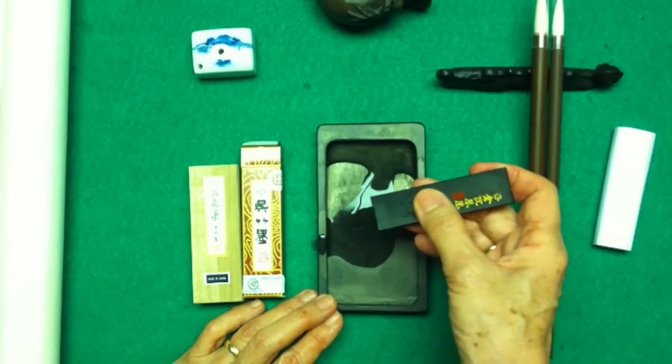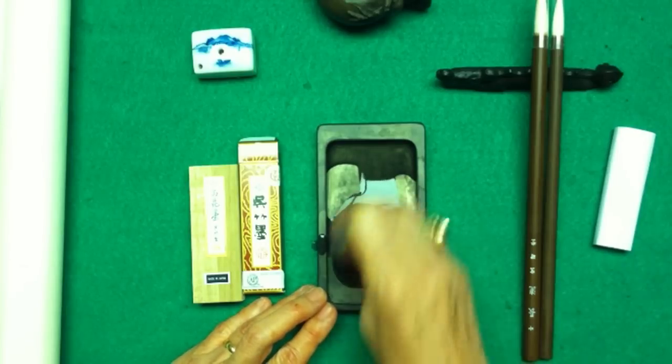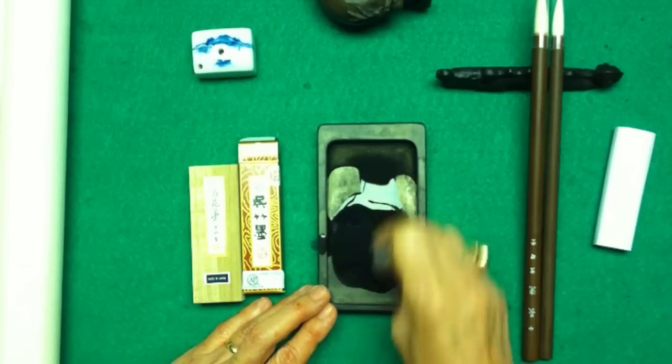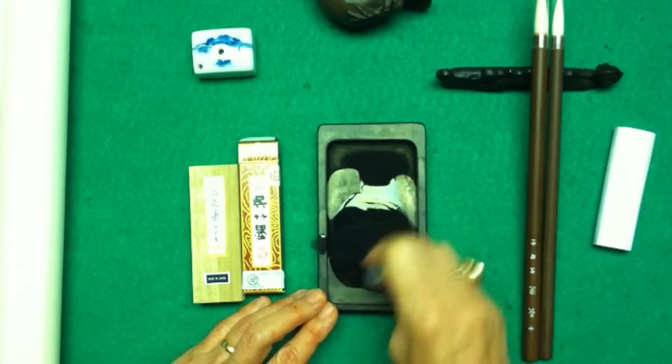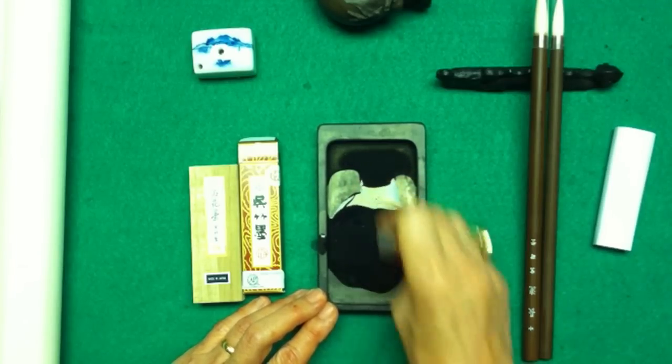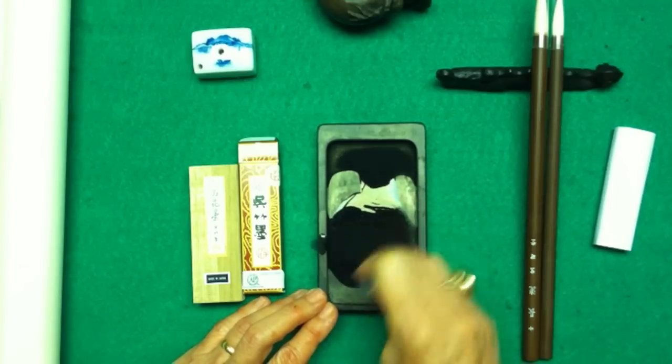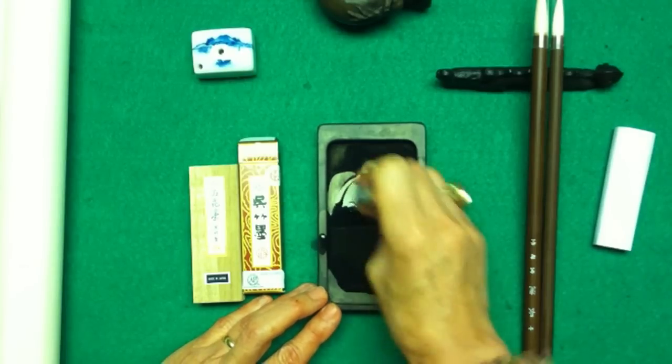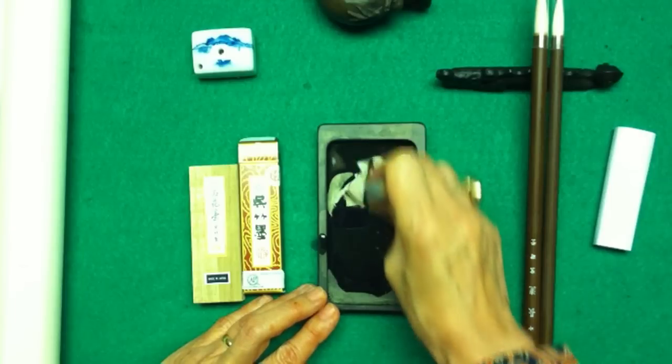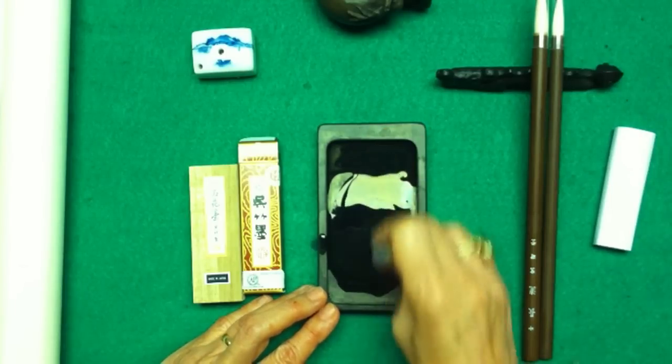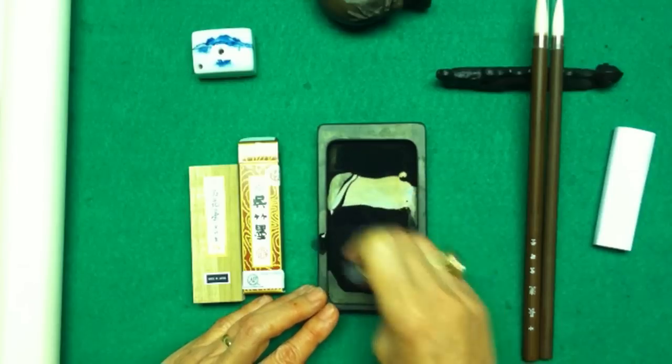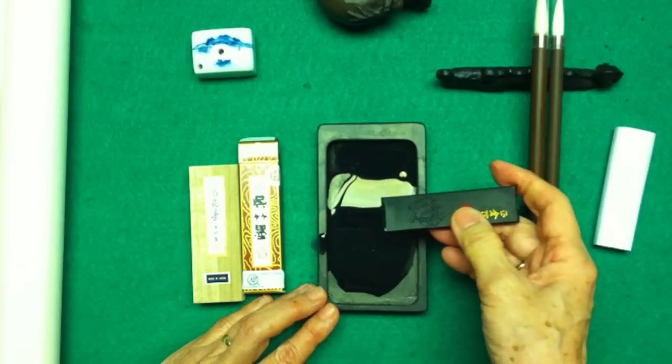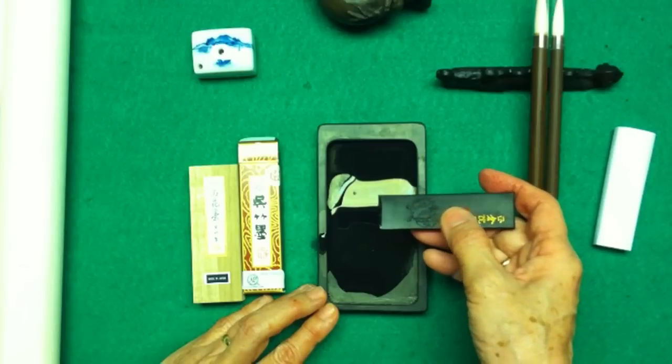You have the perfect condition: water, sumi stick, and grinding stone. Start making this circular movement. See the water changing color into black. You can also see a little oil-like top layer on the water surface because this particular sumi ink is made out of an oil lamp.